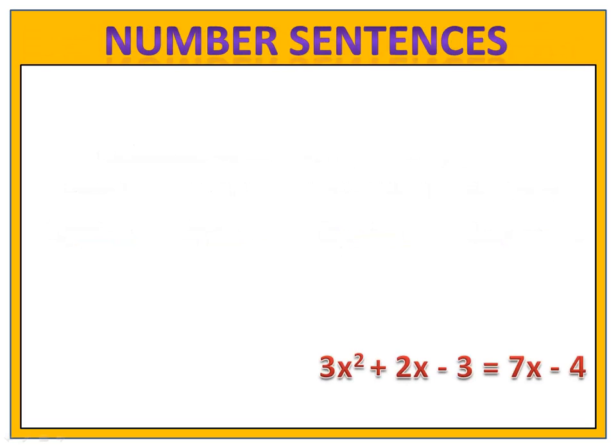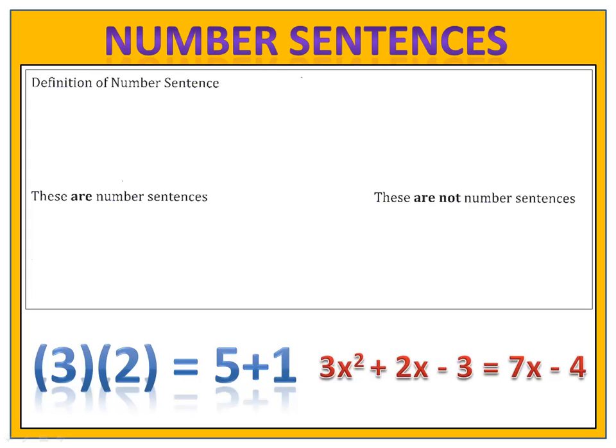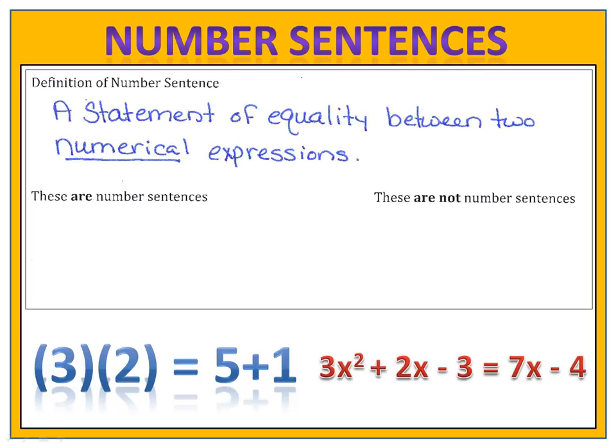We can have equations in all kinds of different forms — equations with variables, or equations with only numbers. An equation that has only numbers is called a number sentence. A number sentence is a statement of equality between two numerical expressions. Numerical is the key word — if there's a variable, it's no longer a number sentence.